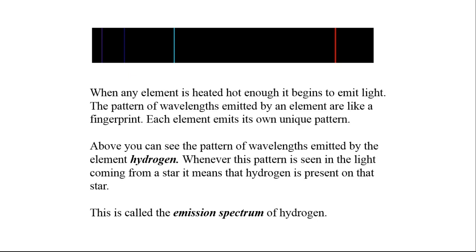Above you can see the pattern of wavelengths emitted by the element hydrogen. When this pattern is seen in the light coming from a star, it means that hydrogen is present on that star. This is called the emission spectrum of hydrogen.